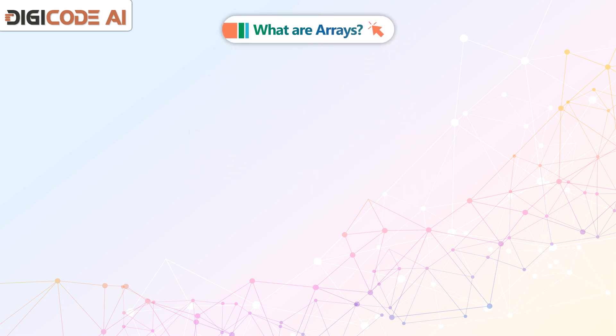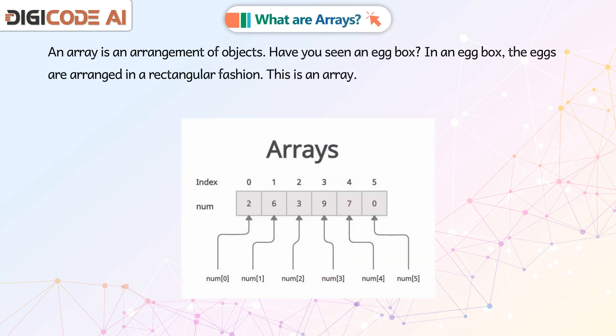What are arrays? An array is an arrangement of objects. Have you seen an egg box? In an egg box, the eggs are arranged in a rectangular fashion. This is an array.